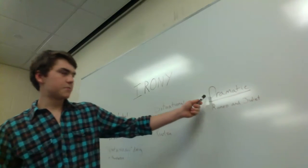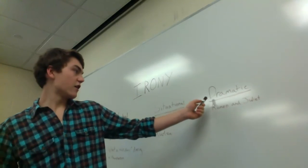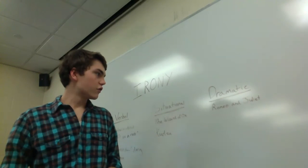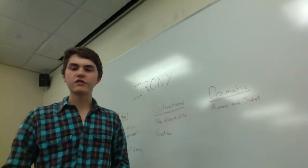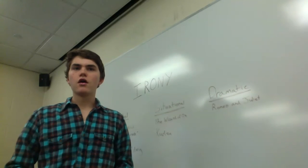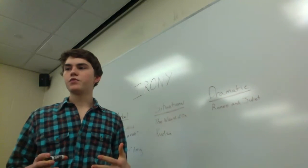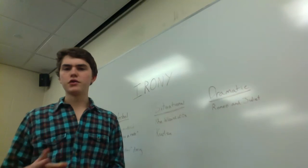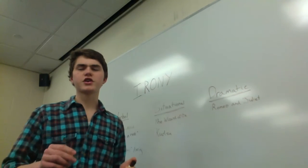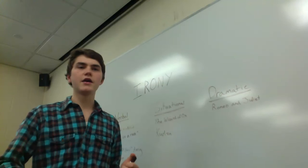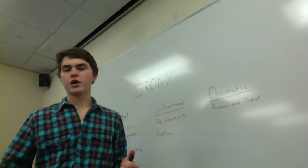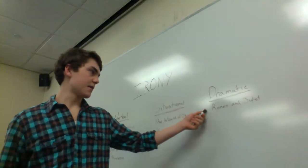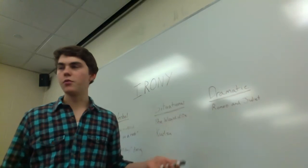The last major kind of irony is known as dramatic irony. Dramatic irony is basically when an audience knows something that the characters in a movie, play, or book don't. The classic example of this is Romeo and Juliet.